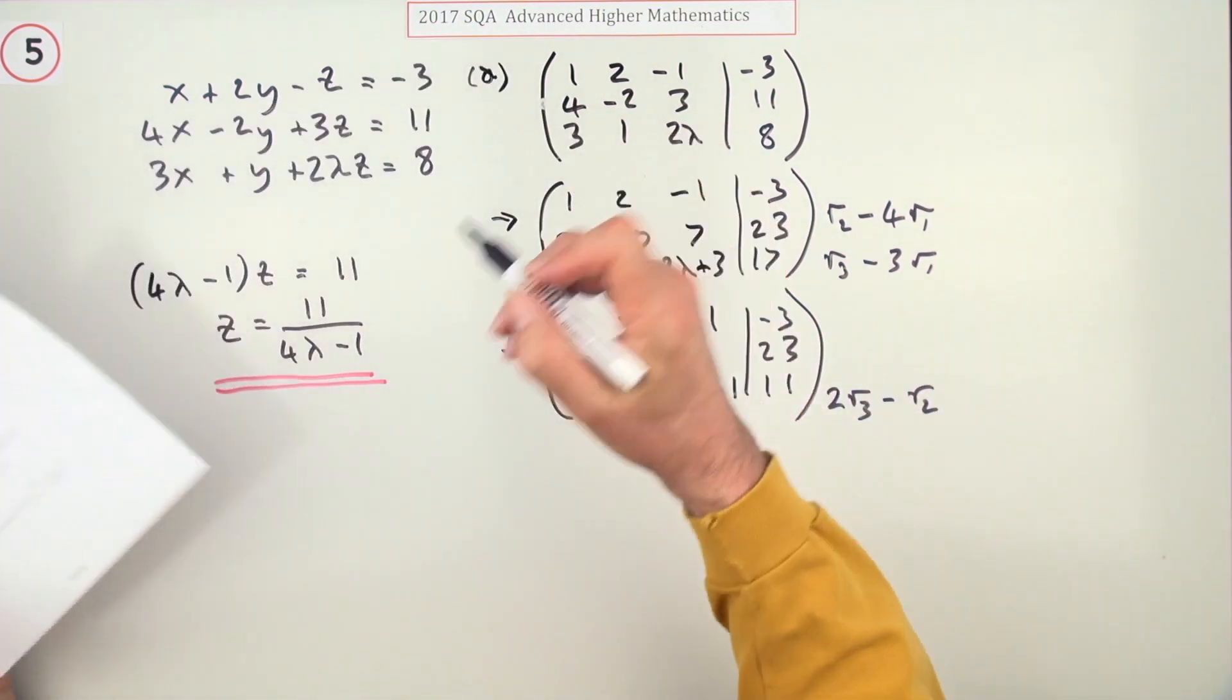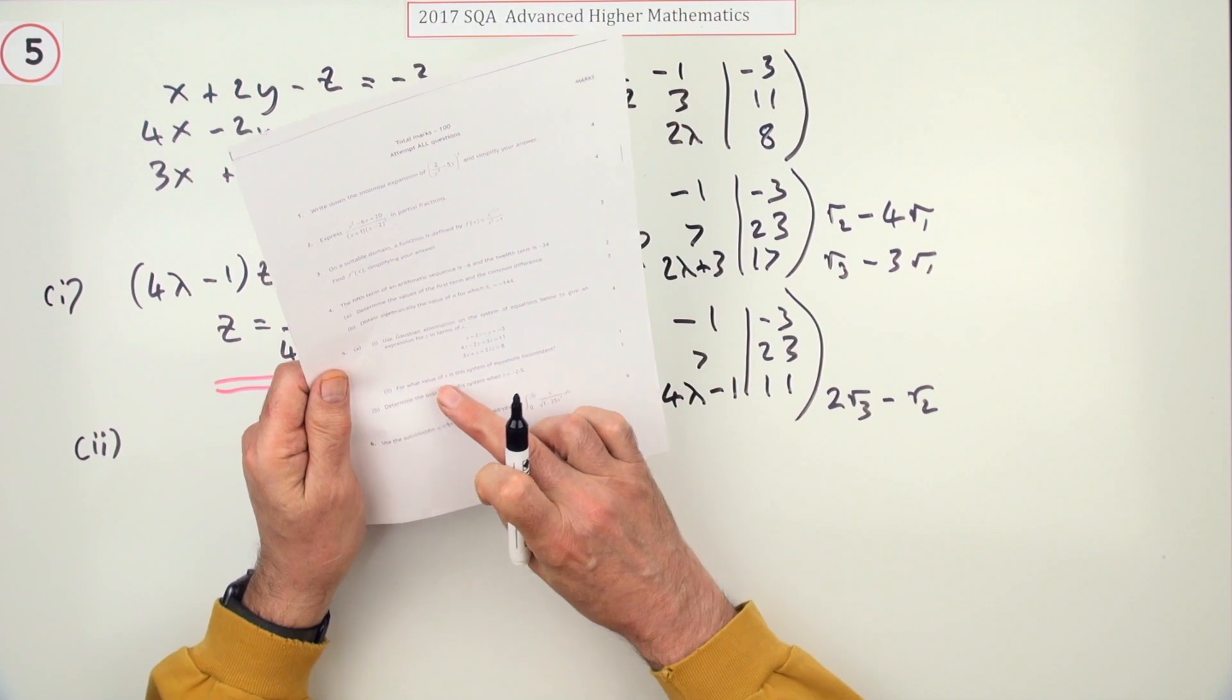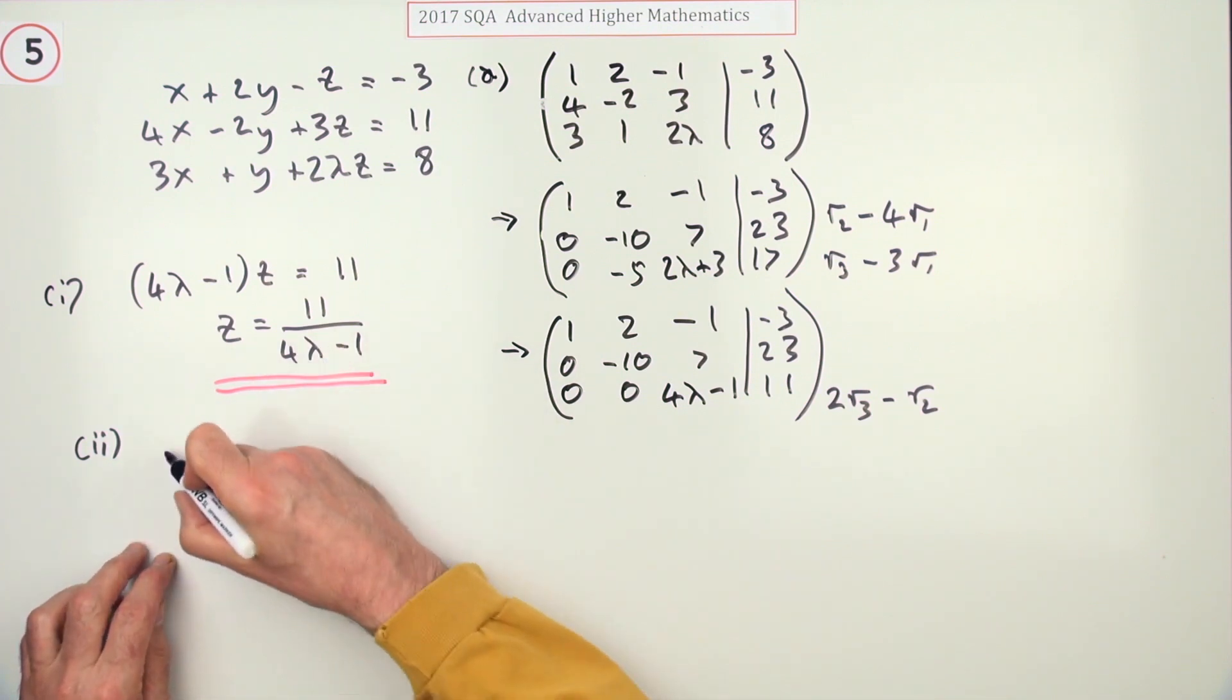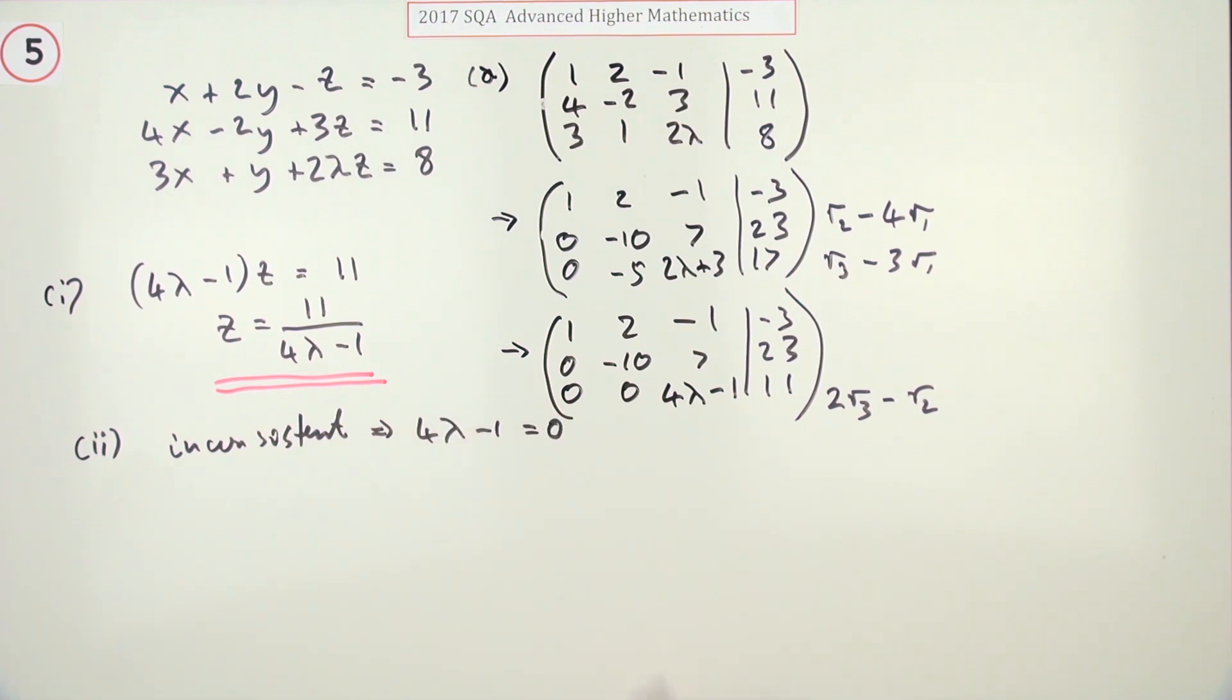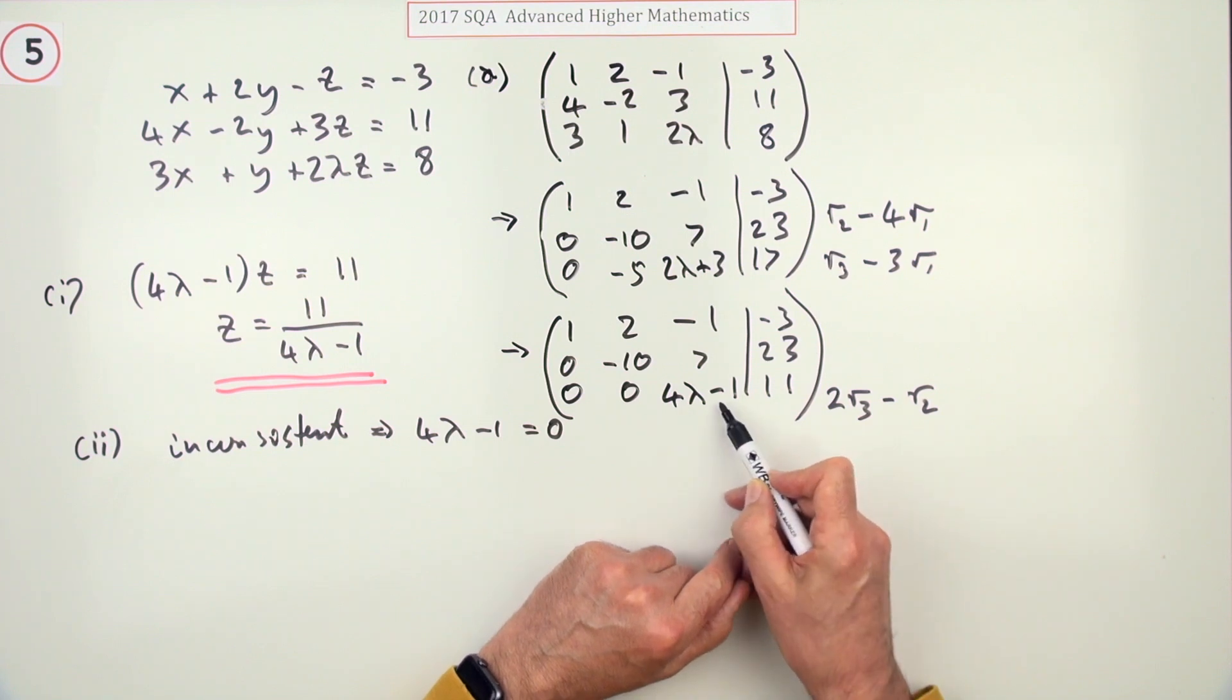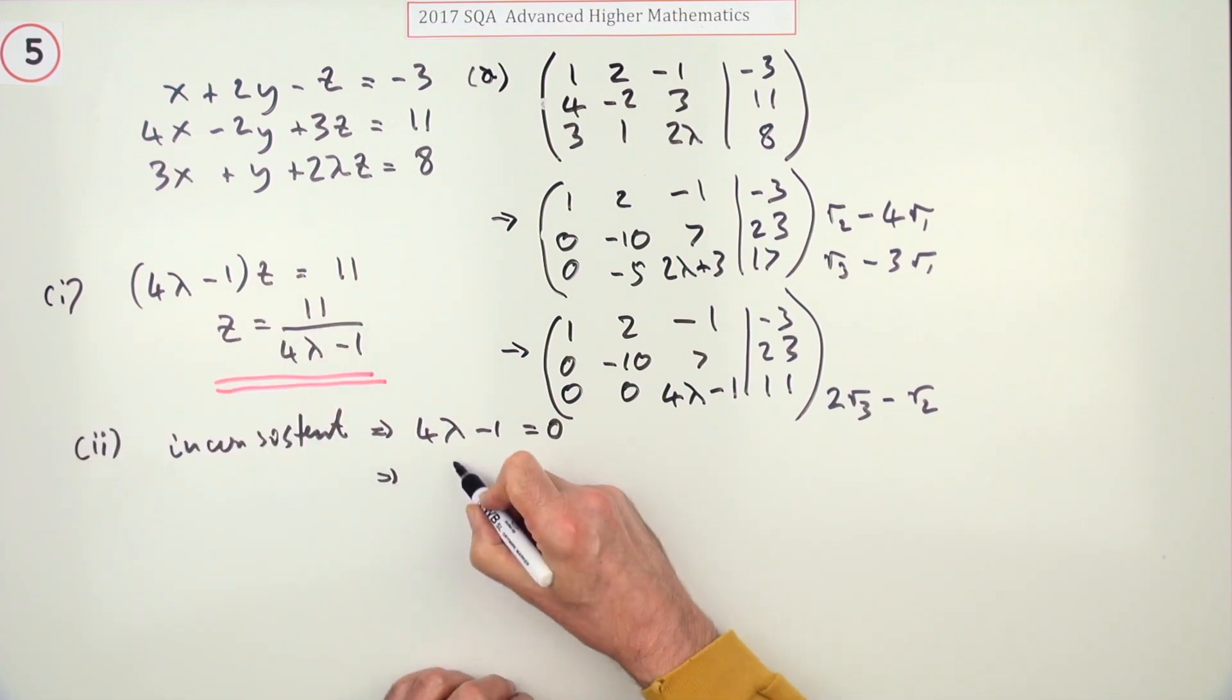Now, well there's a part 2. That was actually part 1 so I'll just put it there. For what value of lambda is this system inconsistent? Well it would be inconsistent if you tried to work that out and you would end up dividing by 0. So you can just say that straight away. It's inconsistent if 4 lambda minus 1 is equal to 0. Or you could just take it from here because that would say you've got 0 times something giving you 11, which is impossible. So if 4 lambda minus 1 is 0 it's inconsistent. So what's the value of lambda? Take the 1 across and divide by 4. It's a quarter.